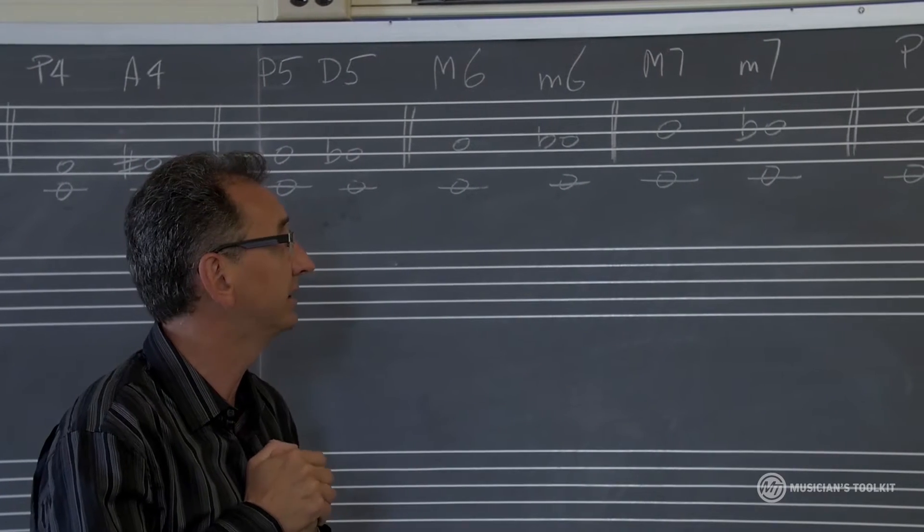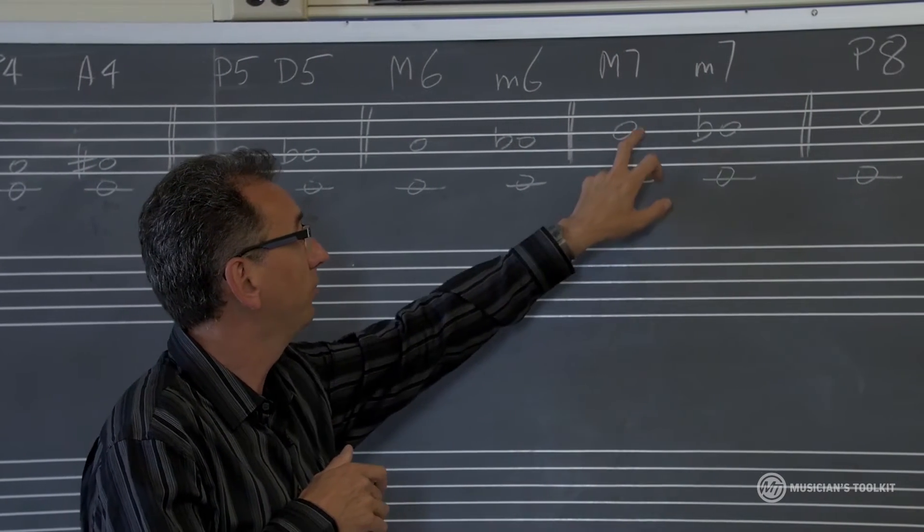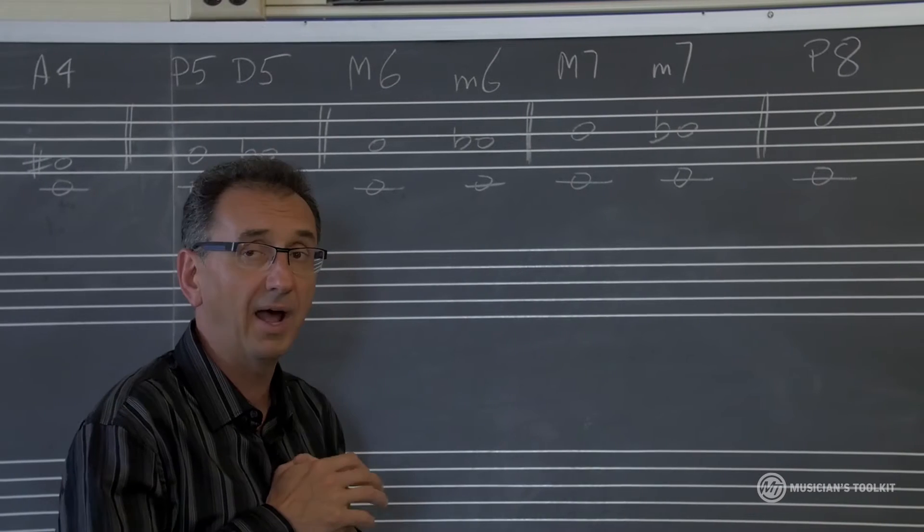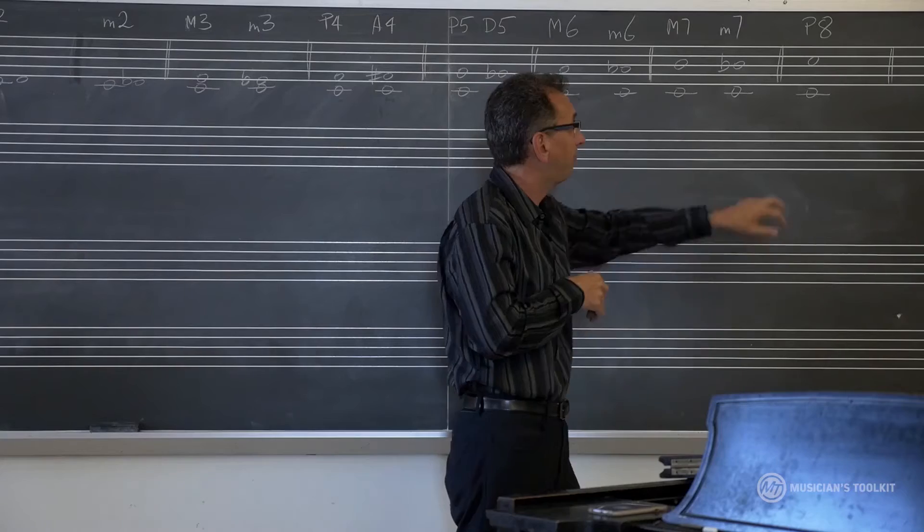Major seventh has 11 semitones, C to B, and C to B flat has 10 semitones, and perfect octave.